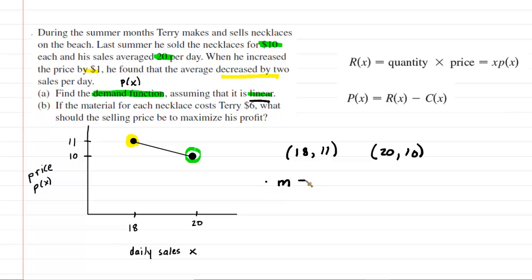So we'll say that the slope m is equal to the change in y. Most of us have learned this as x1, y1, and then x2, y2. So the equation for slope would be y2 minus y1 divided by x2 minus x1. So we can see the slope here is going to be 10 minus 11 divided by 20 minus 18. We're going to get a slope equal to negative 1 half.